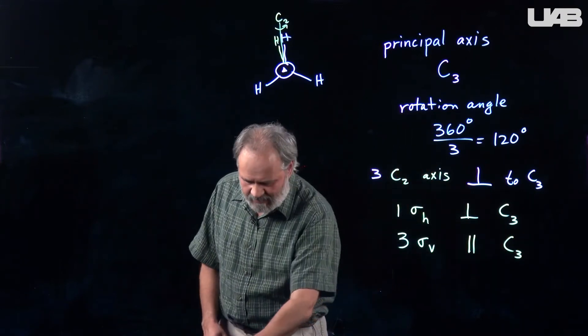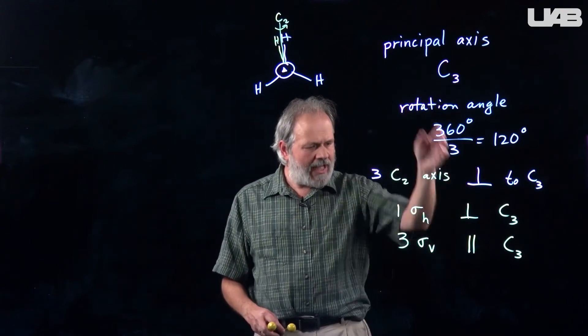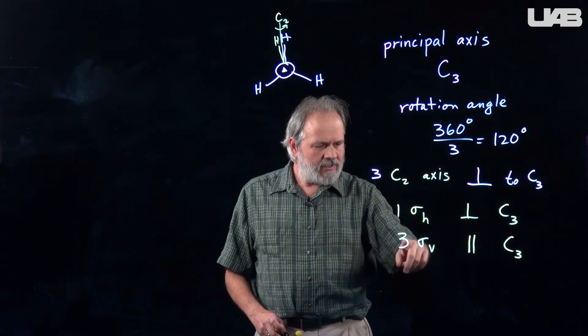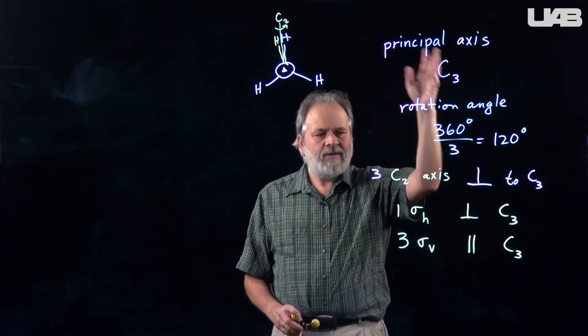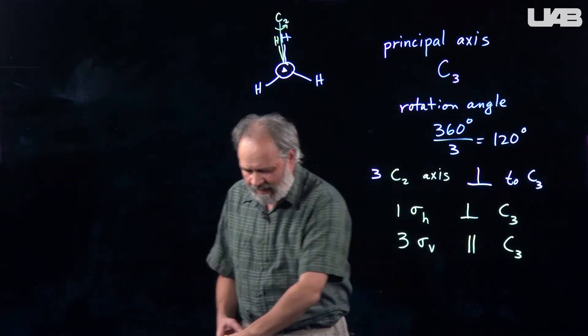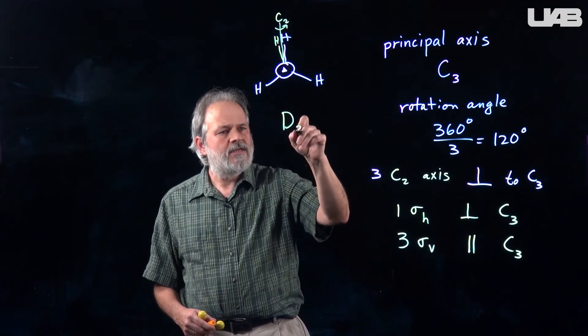And then there's various other symmetry elements. So the flow chart doesn't necessarily have you identify every one of these as you go through. But by the time you get down to the end of the flow chart, you will get the identification of this point group is D3H.